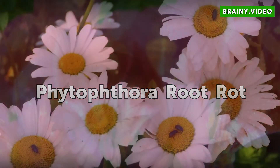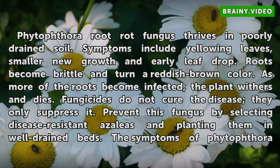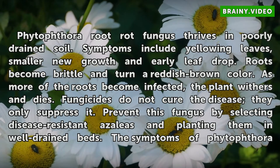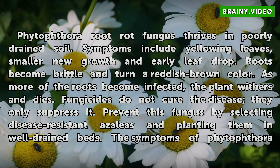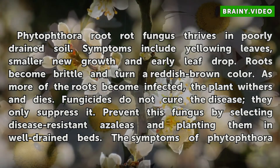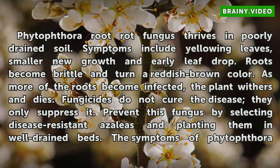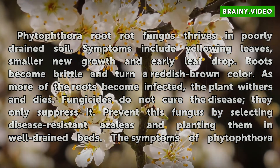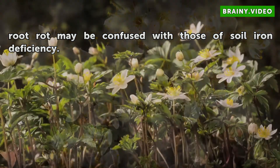Phytophthora root rot fungus thrives in poorly drained soil. Symptoms include yellowing leaves, smaller new growth, and early leaf drop. Roots become brittle and turn a reddish-brown color. As more of the roots become infected, the plant withers and dies. Fungicides do not cure the disease, they only suppress it. Prevent this fungus by selecting disease-resistant azaleas and planting them in well-drained beds. The symptoms of Phytophthora root rot may be confused with those of soil iron deficiency.